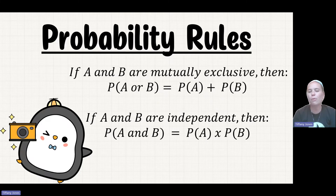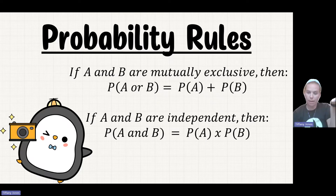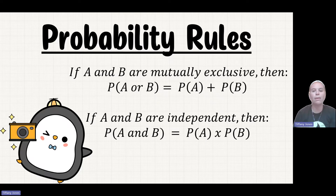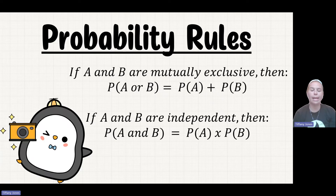This would be like if we're looking at the probability of being a dominant phenotype in complete dominance. That would be the probability of being homozygous dominant and the probability of being heterozygous, because those would add together to give you the dominant phenotype in that case.